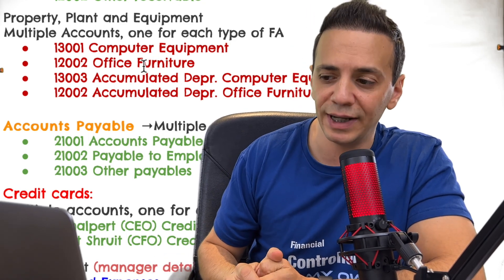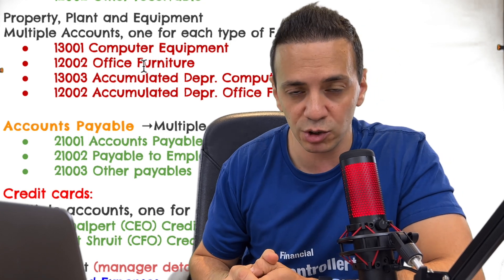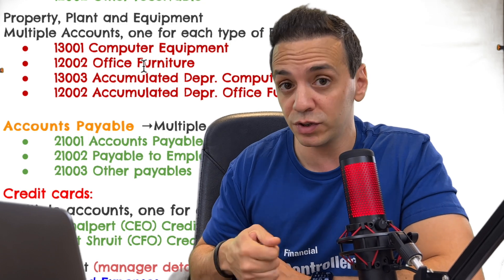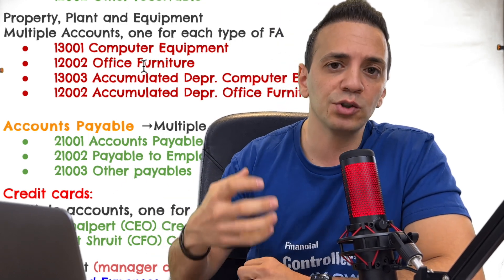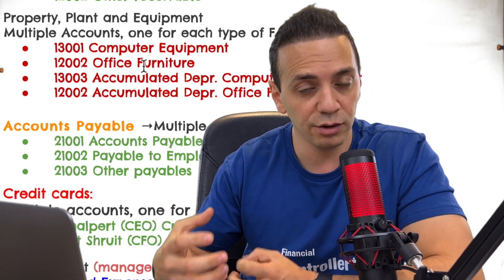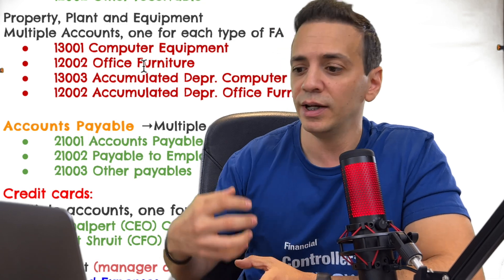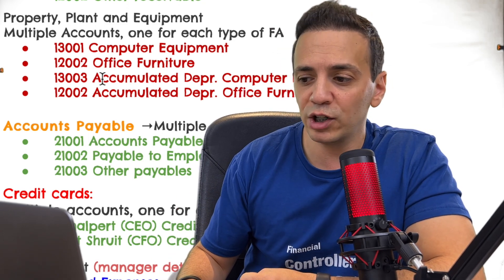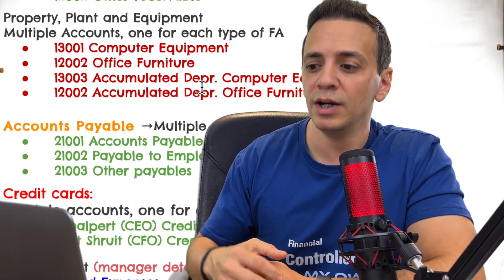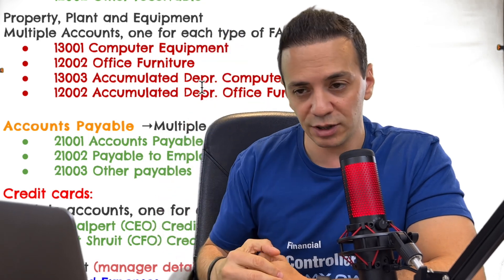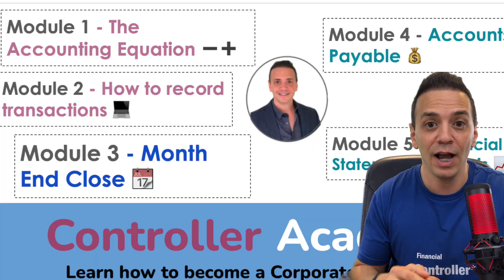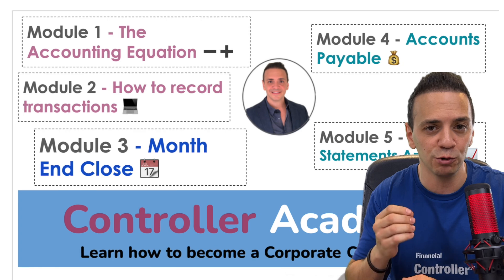The next major balance sheet item is property, plant, and equipment. I like to create one account for each type of fixed asset. For Spa Booker that might be computer equipment and office furniture — so one account for each. Then I create two accumulated depreciation contra asset accounts, one for each asset class. A contra asset is a reduction to the asset, accumulating the depreciation and reducing the asset's value over time.